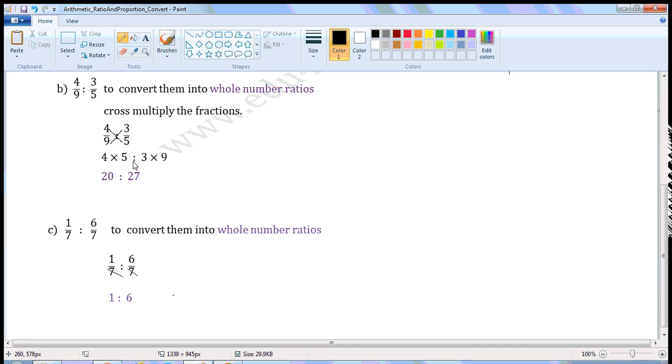So 4 × 5 is to 3 × 9. 4 × 5 is 20, is to 3 × 9 is 27. So 20 to 27 is the whole number ratio of the given ratio.